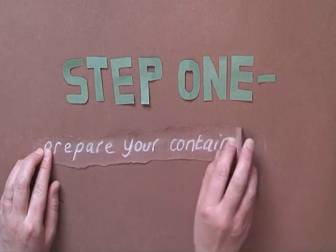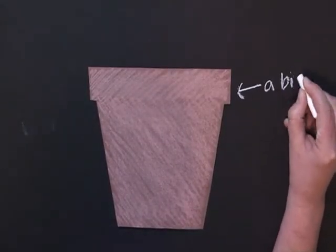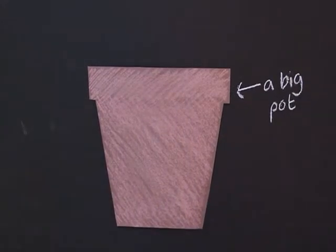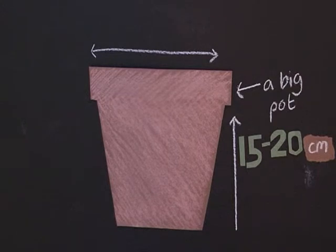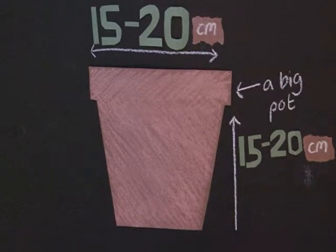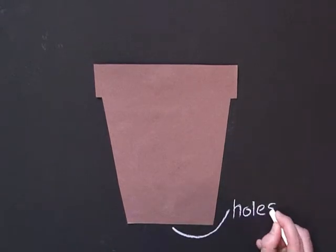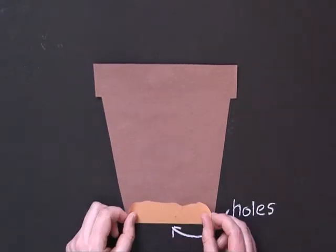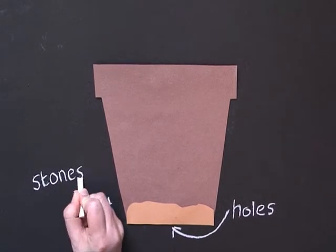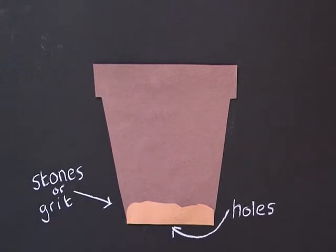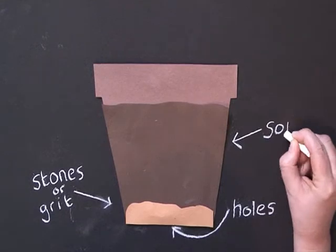Step 1: Prepare your container. Check that there are enough holes to allow water through. Line the base with broken crockery, stones, or grit. Fill the container two-thirds full with soil.